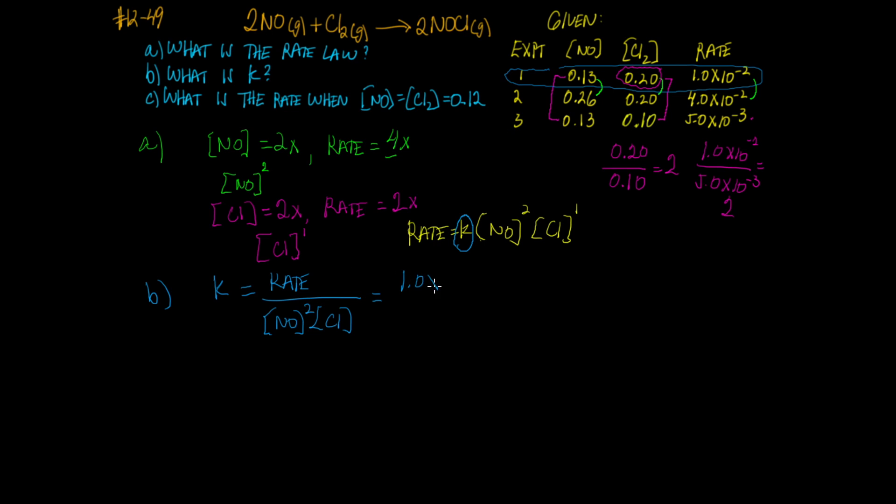The rate is 1.0 times 10 to the minus 2, with units of molarity per second. Down below, we've got NO which is 0.13 molar, and we square that whole thing. We multiply that by 0.20 molarity. Let's think about the units. On top, we have molarity per second. On the bottom, we have molarity squared and molarity. So the units here are going to be molarity to the minus 2 times seconds to the minus 1.